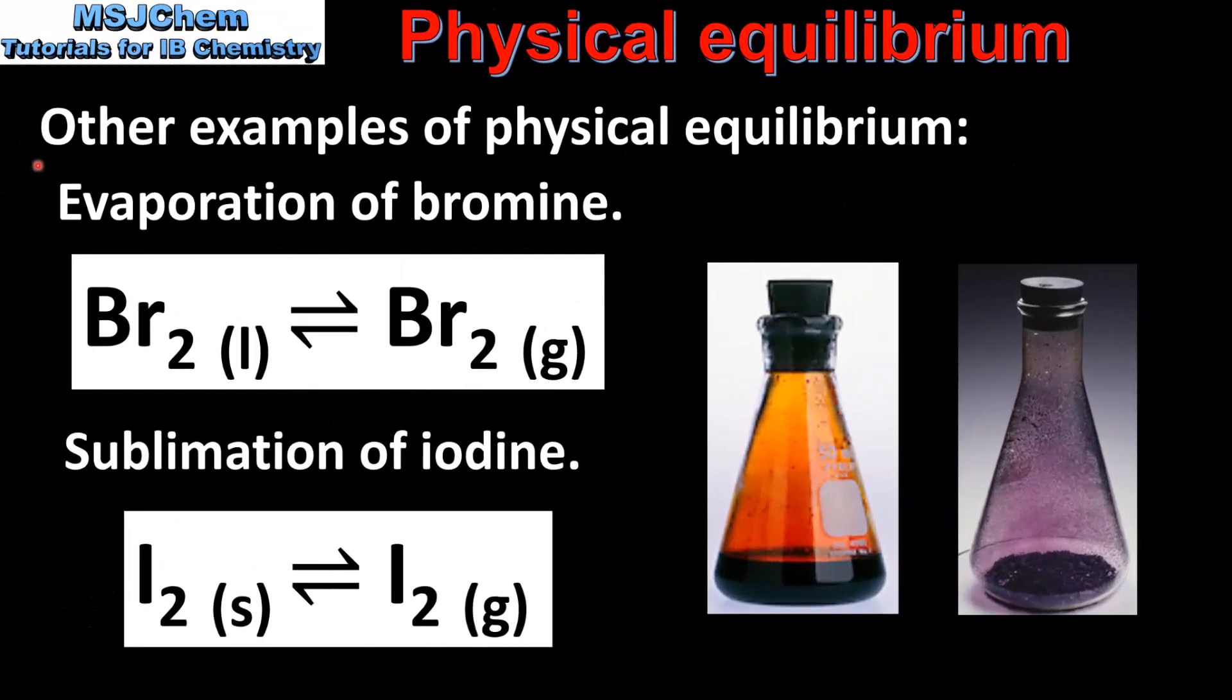Finally we look at other examples of physical equilibrium. The first example is the evaporation of bromine. In this equation liquid bromine is evaporating to form bromine vapor, and bromine vapor is condensing to form liquid bromine. As we can see in the flask on the right, at equilibrium there is no change in microscopic properties such as color.